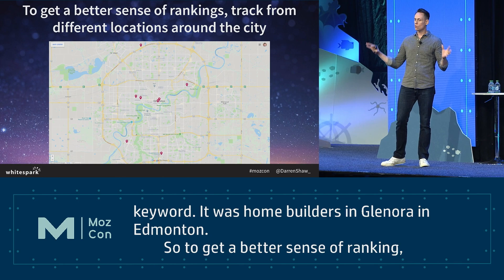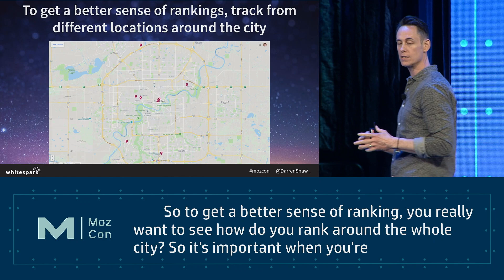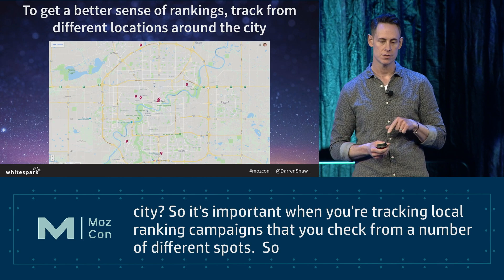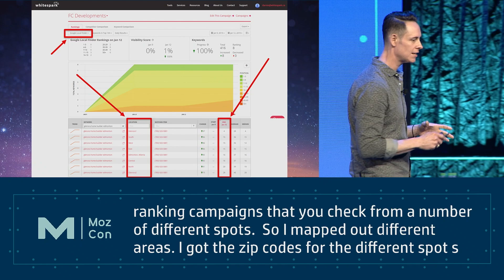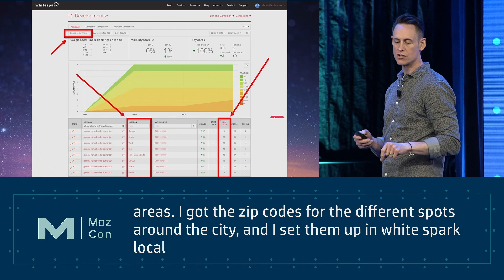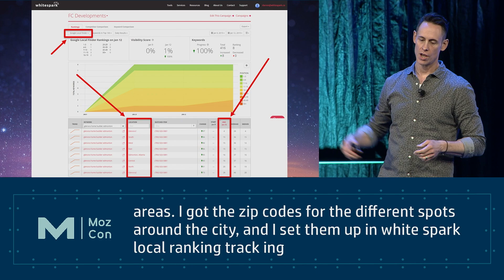To get a better sense of rankings, you really want to see how you rank around the whole city. It's really important when tracking local ranking campaigns to check from a number of different spots. I mapped out different areas, got the zip codes for all those spots around the city, and set them up in our Whitespark local rank tracking software - so you can see the same keyword ranking differently at different locations.